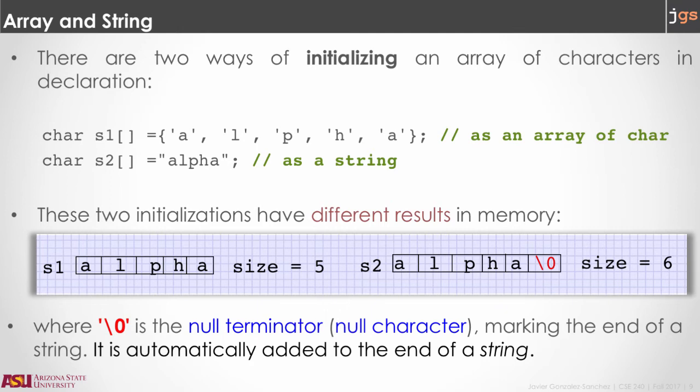When you use a string to initialize an array, that array is going to have one extra element, backslash 0, that is a null character. Null characters are included at the end of a string to mark the end of the string.